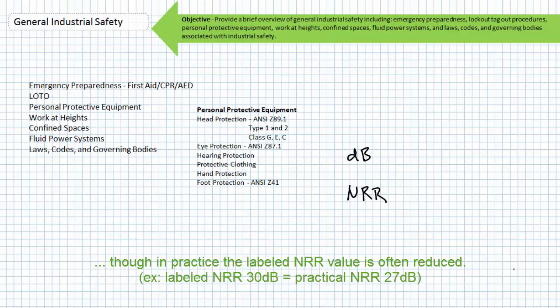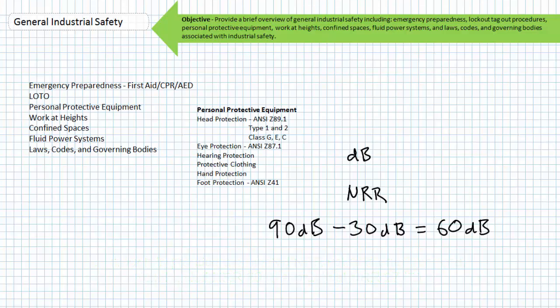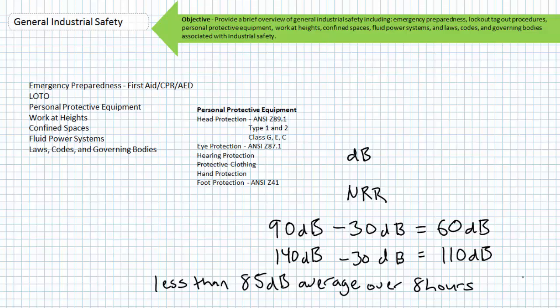Consider a 90 decibel sawmill and you're using an earplug with a 30 decibel noise reduction rating. This earplug will reduce the sound to 60 decibels. OSHA requires individuals to be exposed to less than the time weighted average of 80 decibels over eight hours.